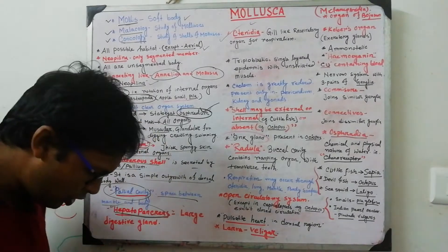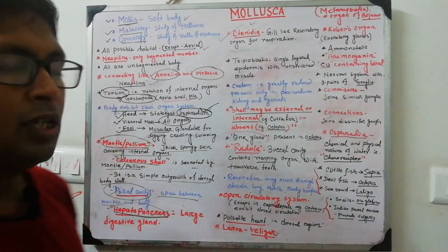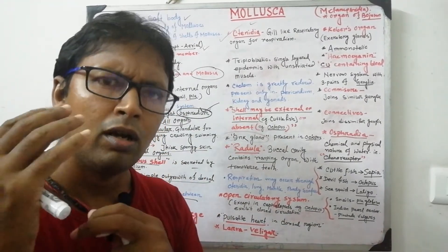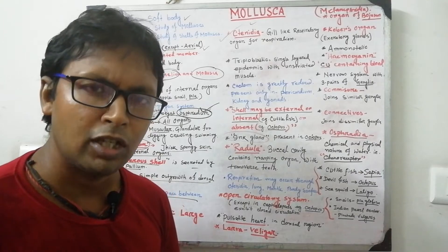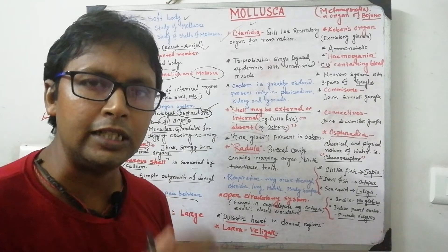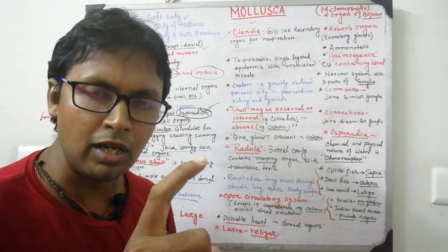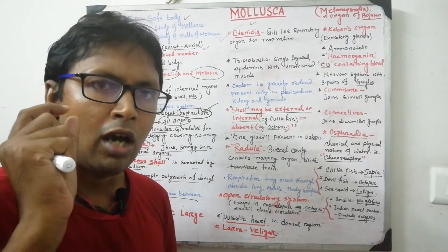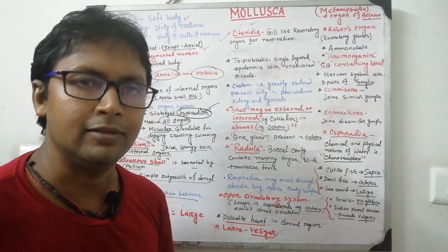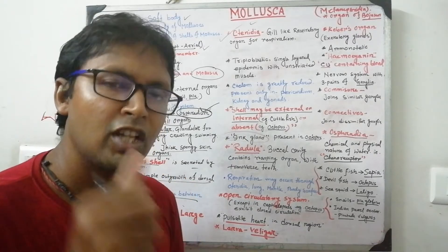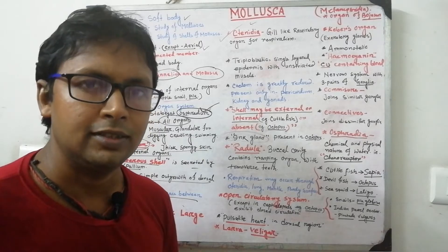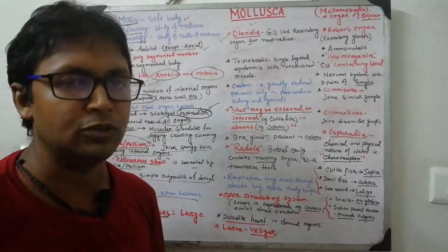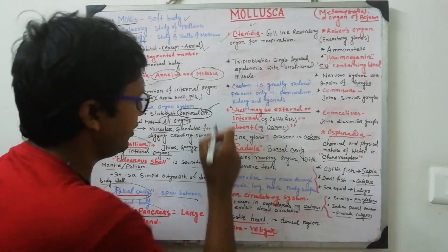Molluscs show clear organ development: the body is divided into head, visceral mass, and foot regions. The head contains ultrasensitive organs like eyes and statocysts. A hallmark structure of this phylum is the osphradium, which is a very important sensory organ associated with chemical reception.